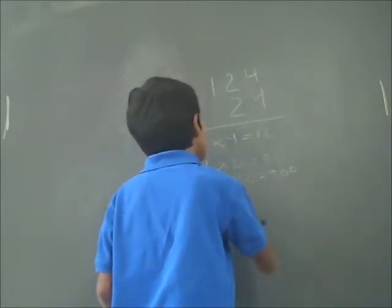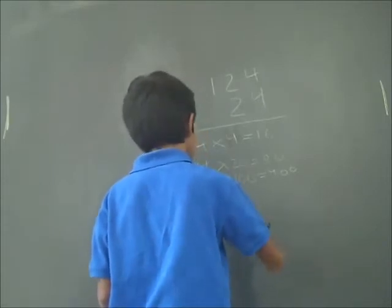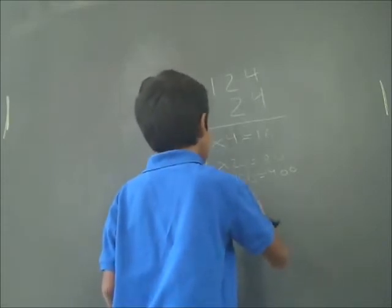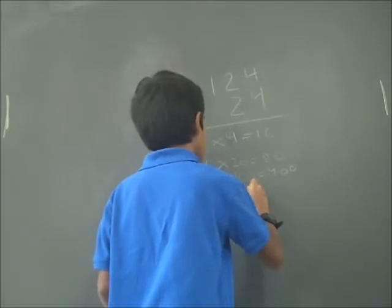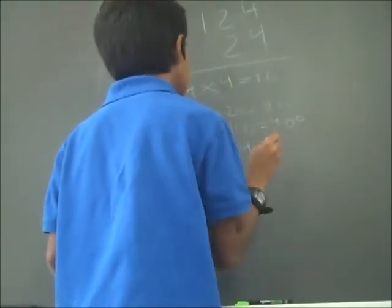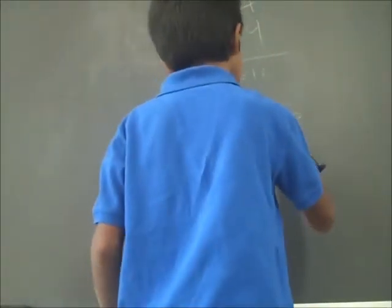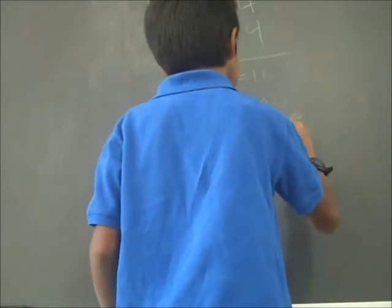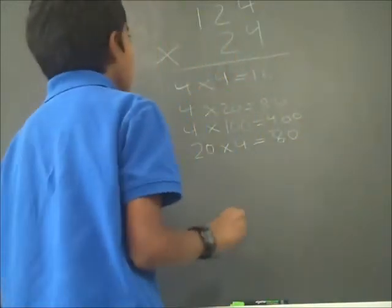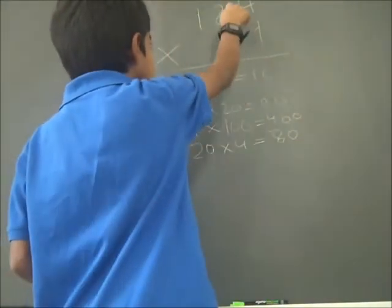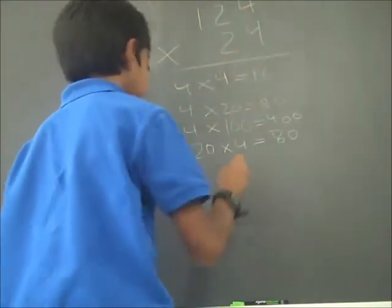So 20 times 4 equals 80. And then you have to do 20 times 20 since it's in the tens place.